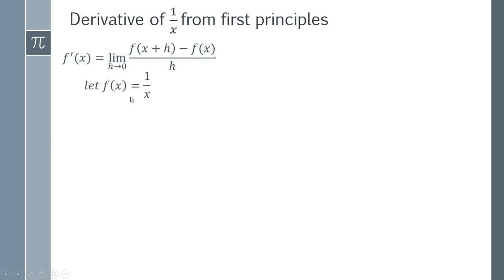We've got f of x equals 1 over x, so we're selecting this f of x to be our original function because we want the derivative of f of x, f dash of x.